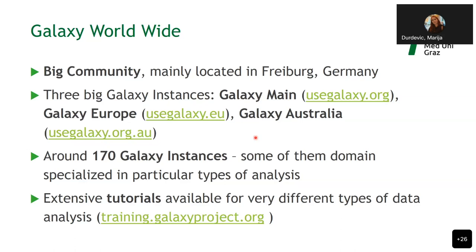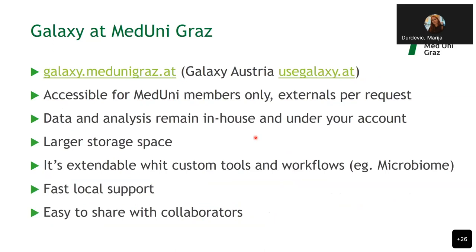Some Galaxy instances are domain-based, meaning they are specialized for a particular type of data analysis — for image analysis, climate analysis, or other data types. They also provide very extensive tutorials available on their training web page and YouTube channel, offering tutorials for beginners on how to use Galaxy, but also for more advanced data analysts with knowledge in certain data types.